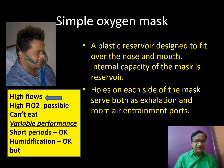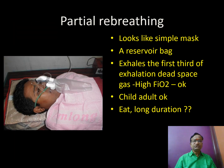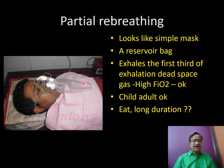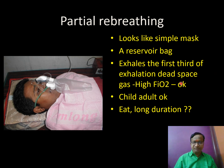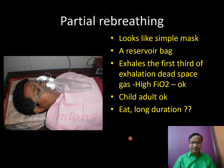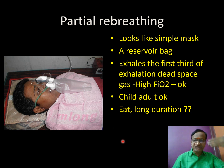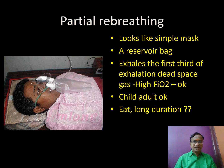The partial rebreathing mask: oxygen flows into the mask and reservoir; you inhale oxygen from both the fresh flow and the reservoir, and the first third of exhalation goes back into the reservoir. High FIO2 is possible — up to 60-70%. It is available in child and adult sizes but cannot be used for long durations.